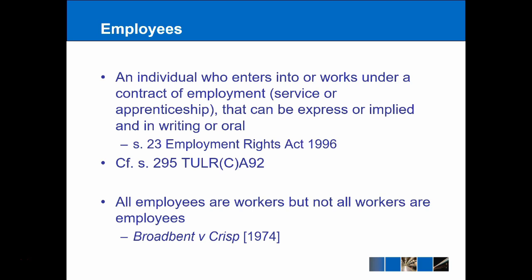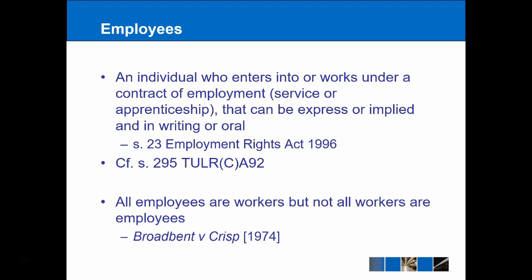So 'employees' is probably the key definition, and the one you'll come back to time and again during your employment law course. It basically refers to an individual who enters into or works under a contract of employment, contract of service, or apprenticeship — and that contract can be express or implied, and if express, either in writing or oral. We get that from Section 23 of the Employment Rights Act 1996, or Section 295 of the 1992 Act. The case of Broadbent and Crisp makes clear that while all employees fall under the wider definition of workers, not all workers will be considered employees because it is a narrower definition.